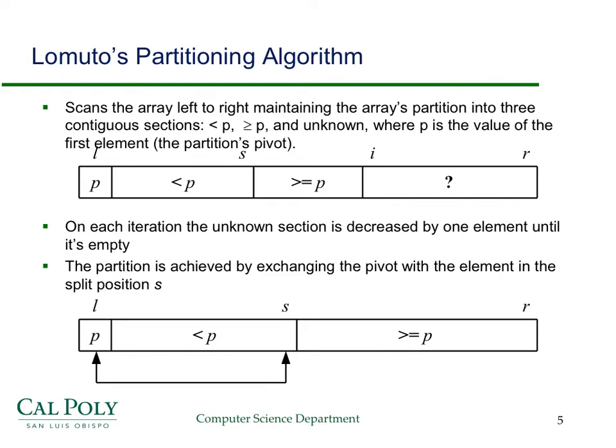So how does Lomuto's partitioning algorithm work? Let's start out with sort of the middle, from being in the middle of the algorithm. Here's the picture that we want to have. We want to have the partitioning element at the beginning. Now, sometimes you'll see the implementation with the partitioning element at the end. It really doesn't change things much. And then you'll have a section of the array that's already determined to contain only elements that are less than p, and another section of the array that has elements bigger than or equal to p.